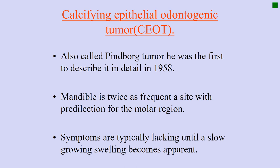The first lesion is the calcifying epithelial odontogenic tumor. As the name suggests, it is epithelial in origin and is abbreviated as CEOT. It is also called Pindborg's tumor because Dr. J.J. Pindborg was the first to describe it in 1958.